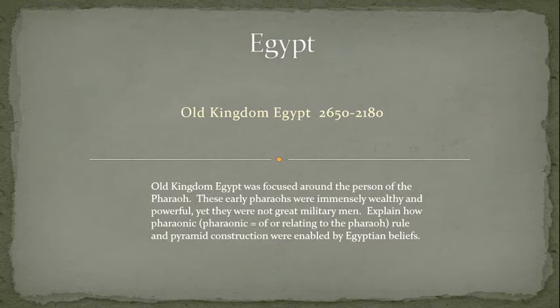Old Kingdom Egypt was focused around the person of the Pharaoh. These early Pharaohs were immensely wealthy and powerful, yet they were not great military men. Explain how Pharaonic rule — that is, of or relating to the Pharaoh — and pyramid construction were enabled by Egyptian beliefs.